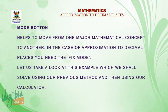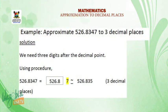Now, let us take a look at this example which we shall solve using our previous method and then using our calculator. The example reads: Approximate 526.8347 to 3 decimal places. This means that we need 3 digits after the decimal point. As we have done before, the 3 digits are 8, 3 and 4. However, 7 is greater than 5 which means we round up. It becomes 1 and that 1 is added to 4, which means our final solution is 526.835.